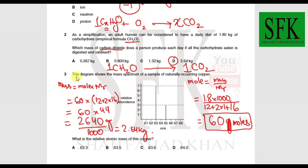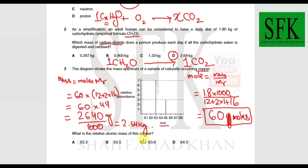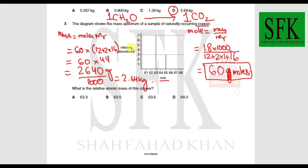MCQ 3: The diagram shows the mass spectrum of naturally occurring copper. The y-axis shows relative abundance and the x-axis shows mass/charge ratio. To calculate the relative atomic mass, note that the y-axis has relative abundances, not percentage abundances. The total of the two isotopes' relative abundances is 7 + 3 = 10.